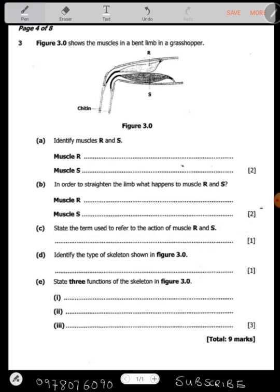We have question 3, this is 2017 GCE by Euroge Paper 2, Question 3. Figure 3.0 shows muscles in a bent limb in a grasshopper. You can see that there is R, there is also S here. Now identify muscle R and S. Muscle R, this is what we call the flexor muscle.